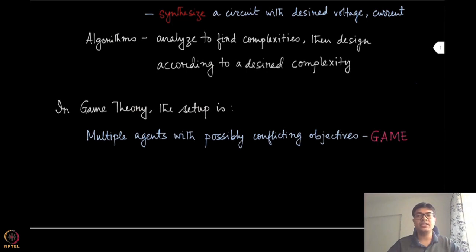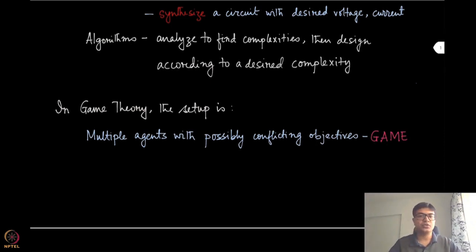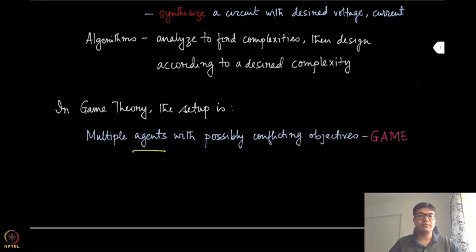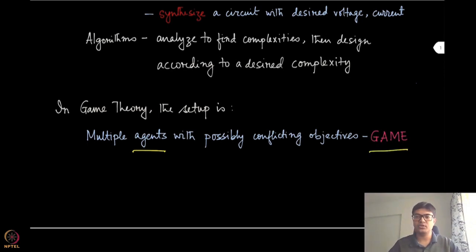We will soon discuss an example that will make this clear. The terms 'agents' and 'players' will be used interchangeably in this course, and this setup of multiple players or agents with their conflicting objectives or payoffs is what we will be calling a game throughout this course.